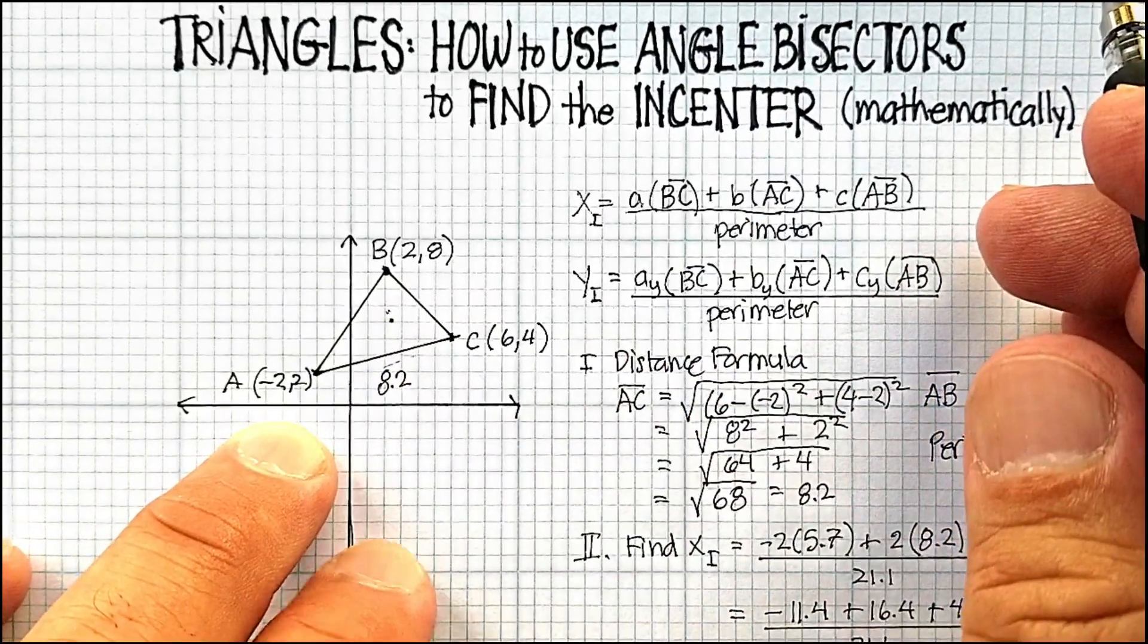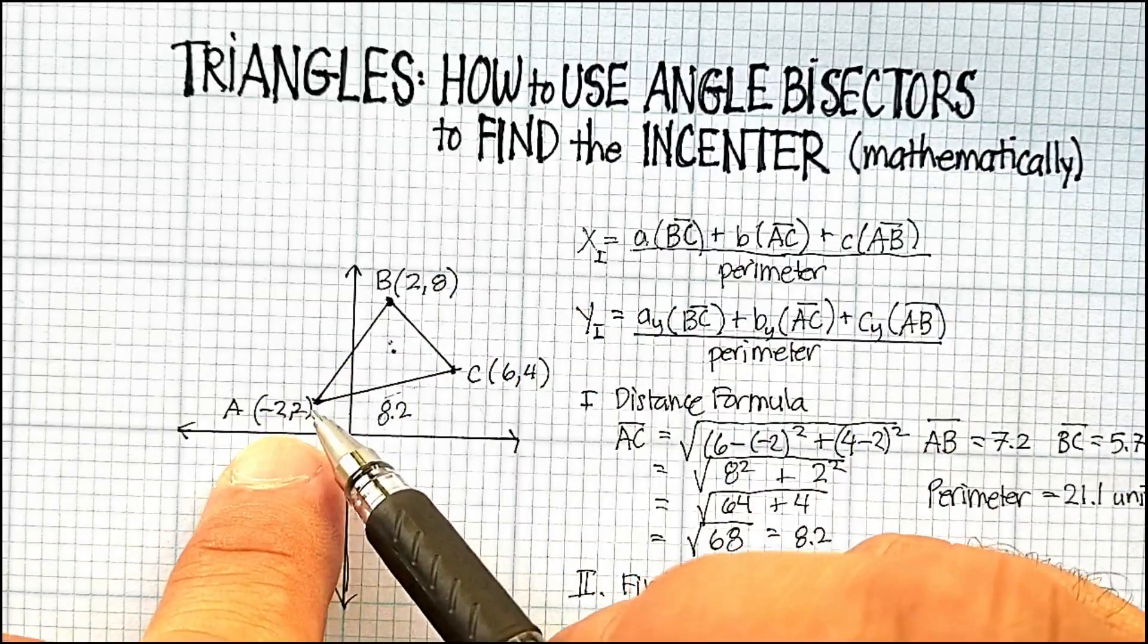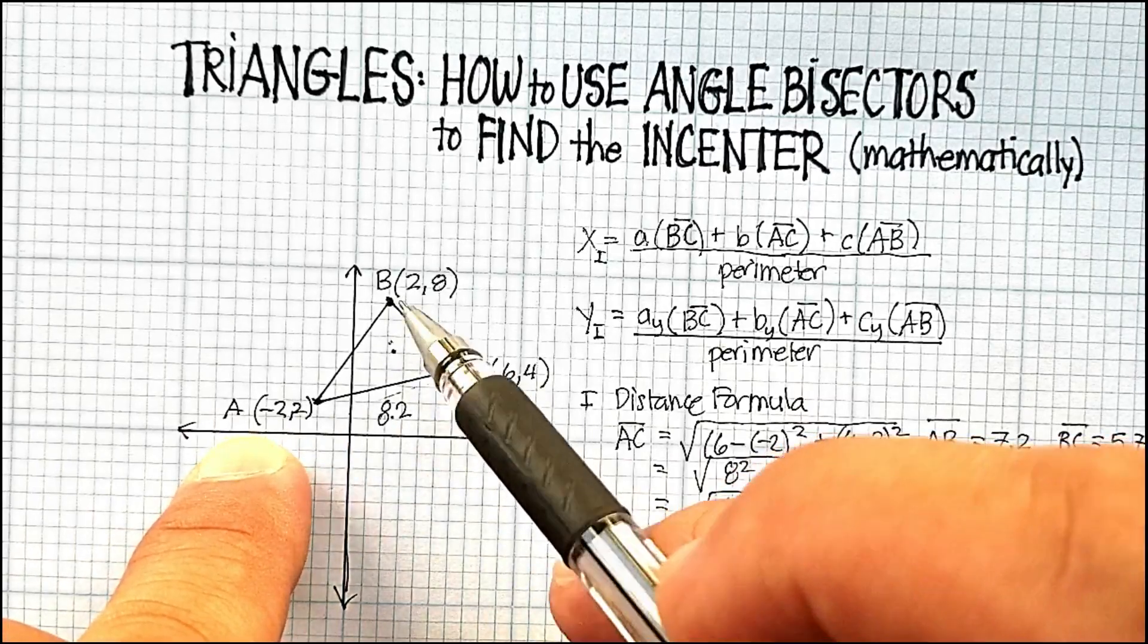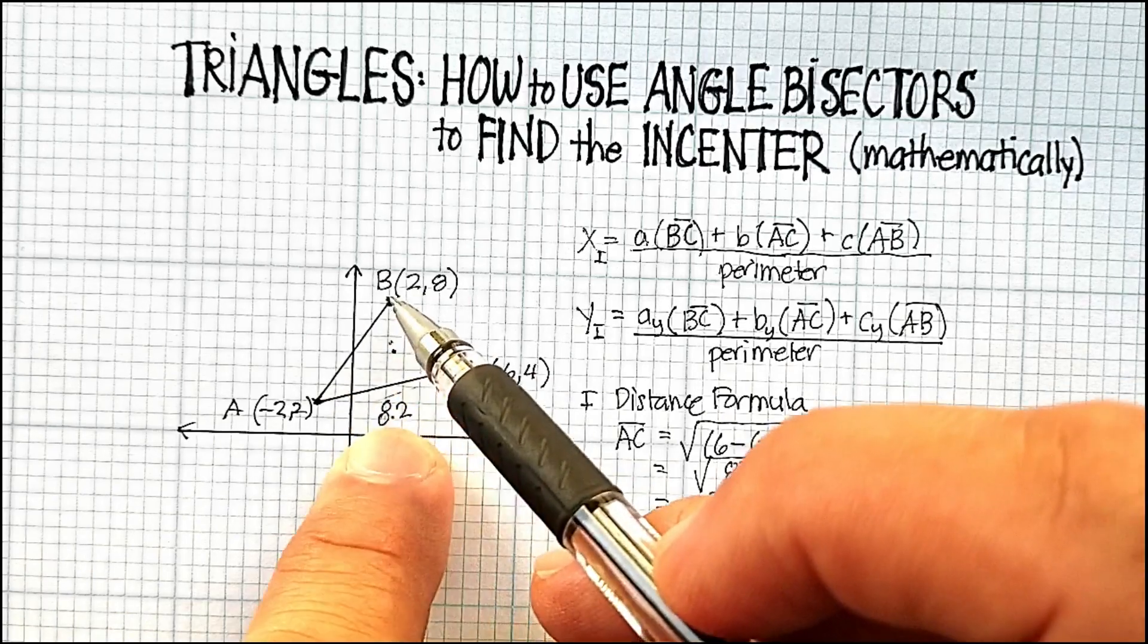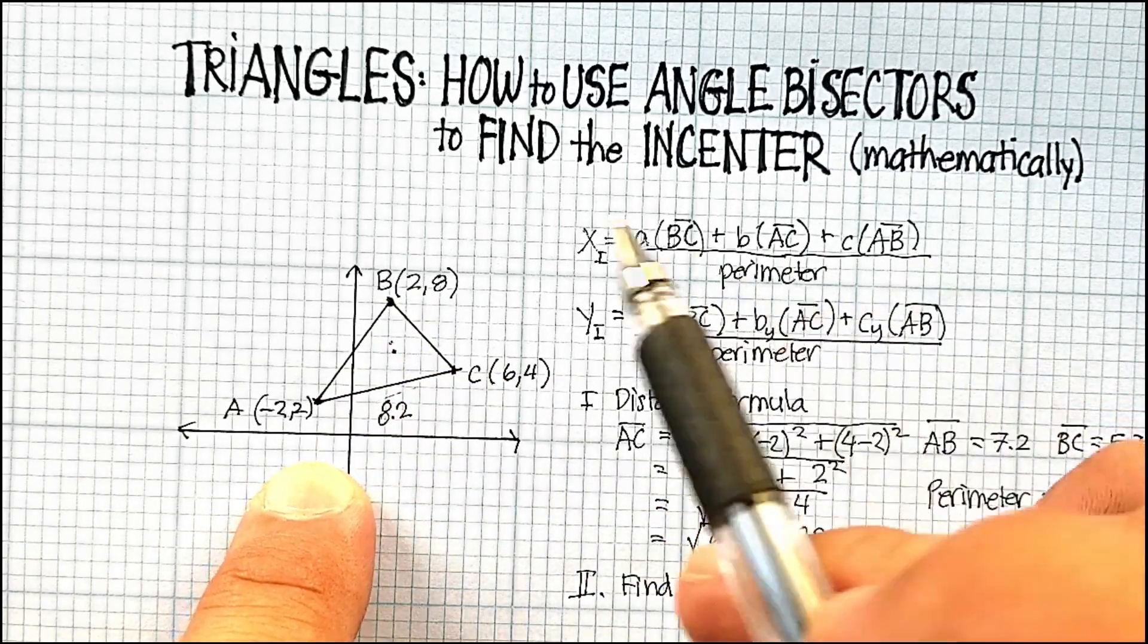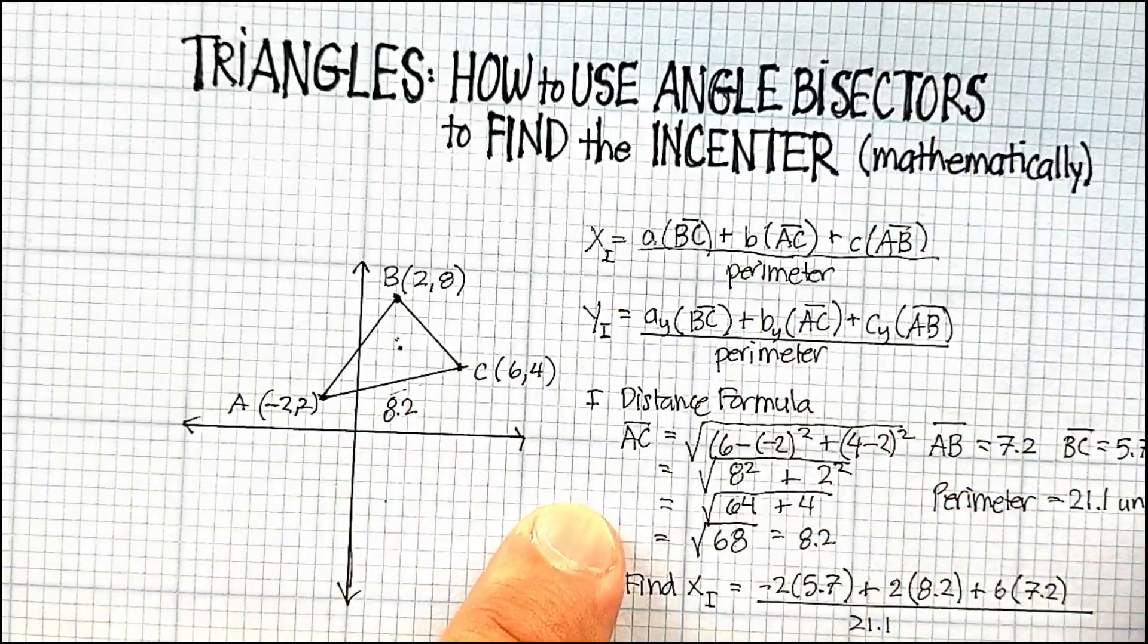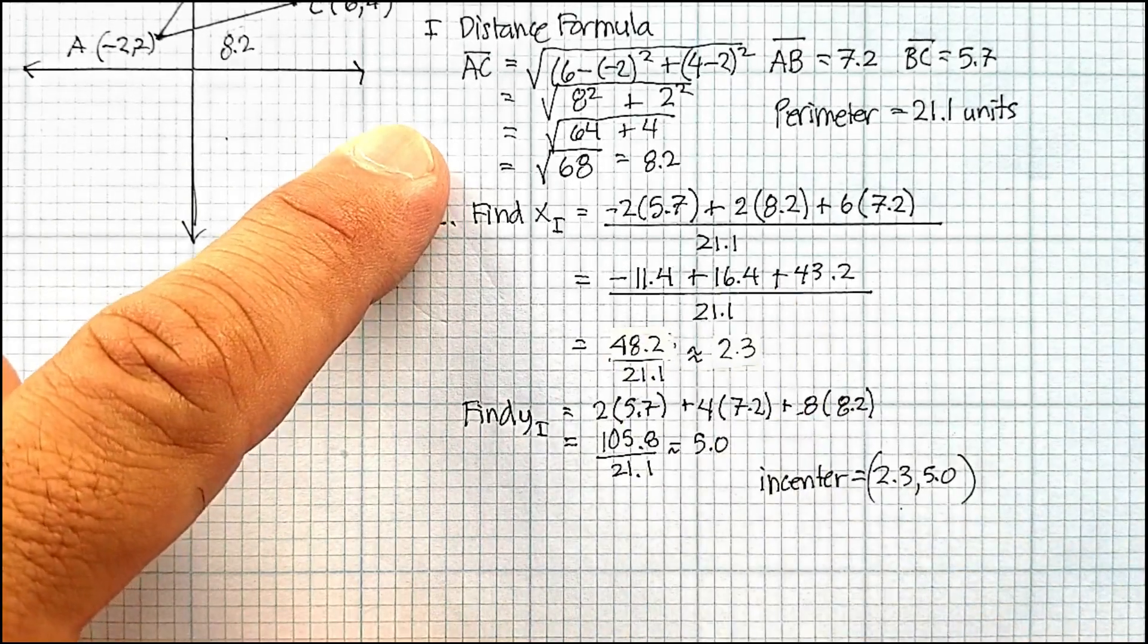So I hope this helped. Remember the equation. Just take the x value multiplied by the opposite distance, the x value here multiplied by the opposite distance, x value here multiplied by the opposite distance, add them all up, divide by the perimeter, and the same thing for the y's, and you'll get the coordinate for the incenter. I hope that was helpful.